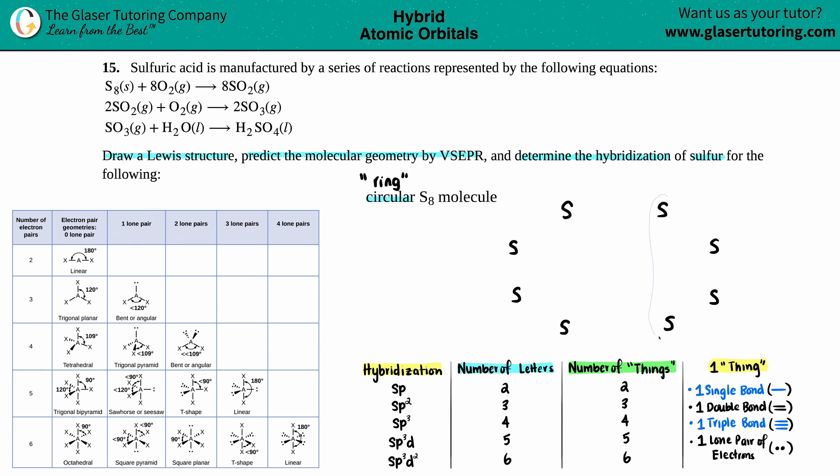Sulfur is in group 16 or 6A. So that means it's got six valence electrons. So I'm just going to draw six valence electrons around each sulfur. So yeah, how's your day going? Hope everything's going well in your neck of the woods. Everything's good over here. Just drawing, having a blast. Love teaching you guys. We're almost there. One, two. I hope I'm drawing six.